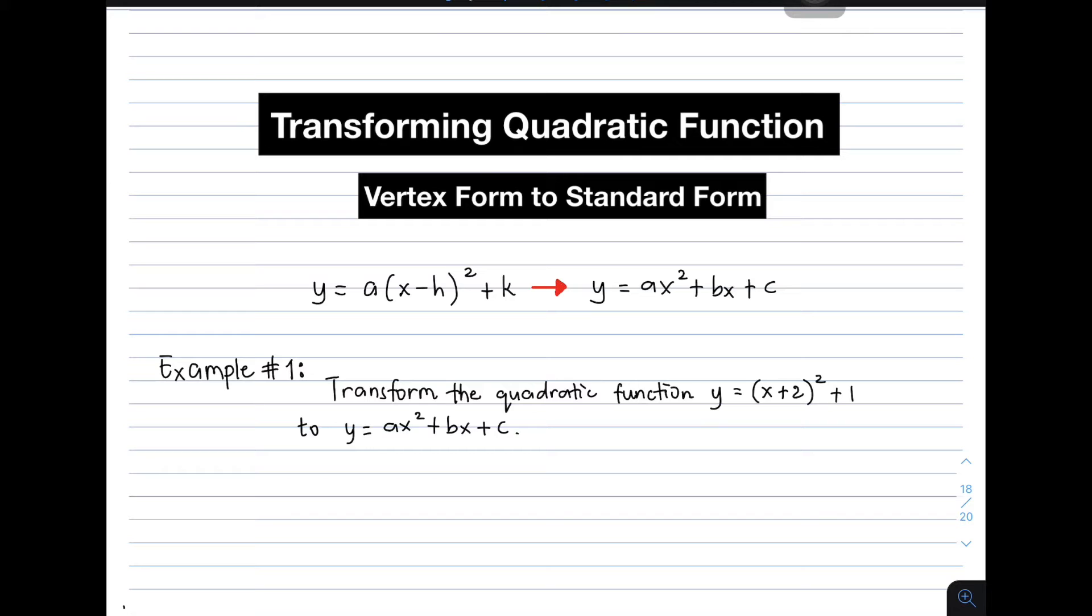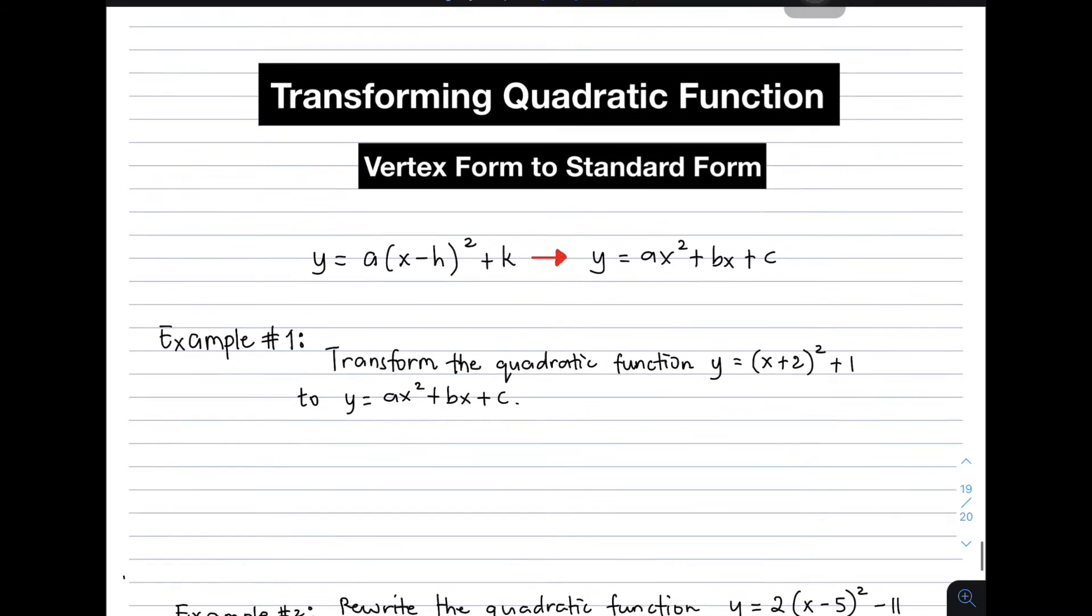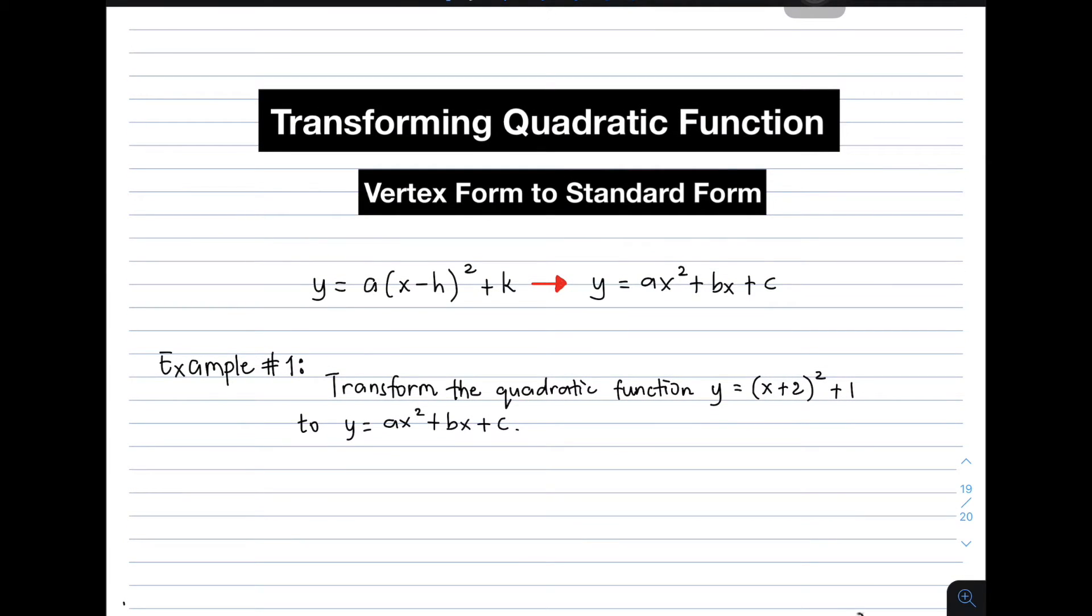Example number one: transform the quadratic function y equals the quantity of x plus 2 squared plus 1 to y equals ax squared plus bx plus c. We will return the equation to its original form. The key here is to manipulate the equation.